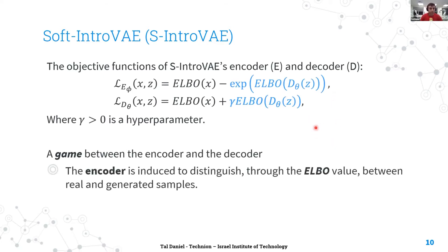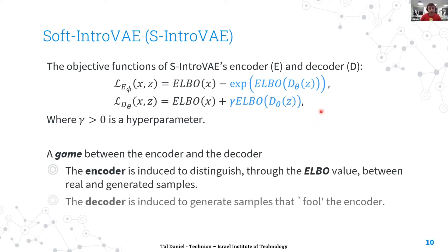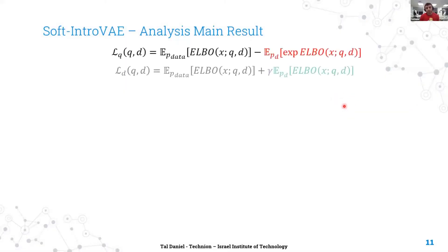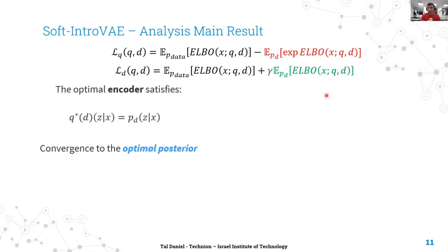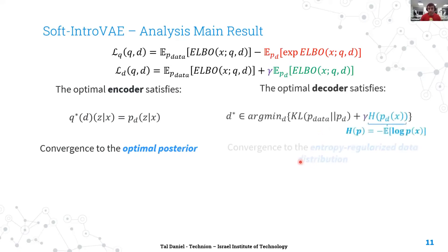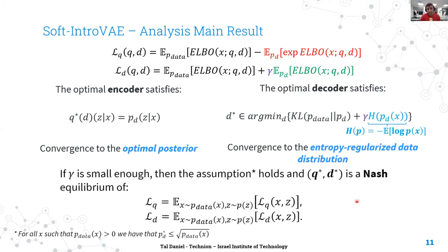Essentially, this is a game between the encoder and decoder: the encoder is induced to distinguish through the ELBO value between real and generated samples, and the decoder is induced to generate samples that fool the encoder. We have developed and proved the theory behind the introspective approach. Two important results: first, for the encoder, we showed that even though we mix the variational setting with an adversarial setting, we still get convergence to the optimal posterior. For the decoder, the optimal decoder satisfies convergence to the entropy-regularized data distribution. Our theorem states that Q* and D* are a Nash equilibrium of the proposed game.